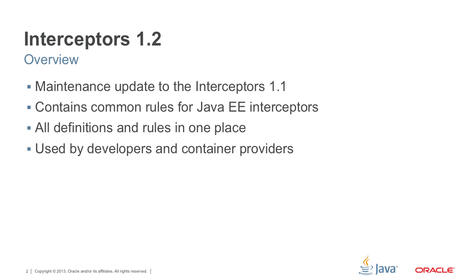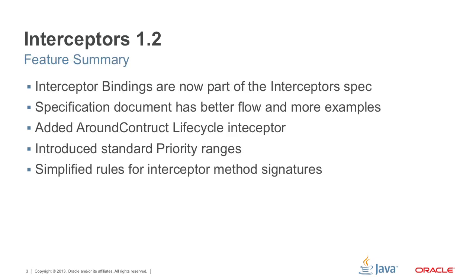The interceptor spec contains all common rules for all Java EE interceptor types. We have all definitions and rules in one place, and the spec is intended to be used by both developers and container providers. In this release, interceptor bindings are now part of the interceptor spec — previously they were only mentioned as existing. We improved document flow, added more examples, introduced a new lifecycle interceptor type around construct, defined standard priority ranges, and simplified rules for interceptor method signatures.